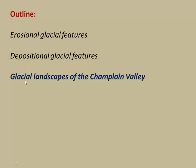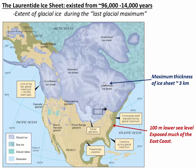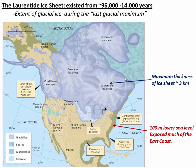Now we'll segue into glacial landscapes of the Champlain Valley. All of northern North America was covered by ice sheets — in our case the Laurentide ice sheet, which existed from about 96,000 to 14,000 years ago. Vermont spent roughly 80,000 years under the ice, which is not very long ago, and the ice was very thick — as much as three kilometers at its peak.